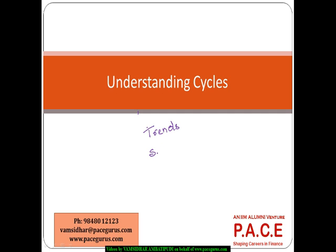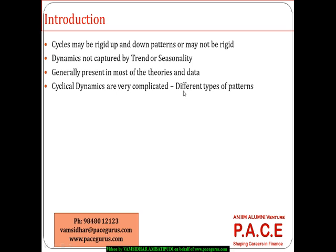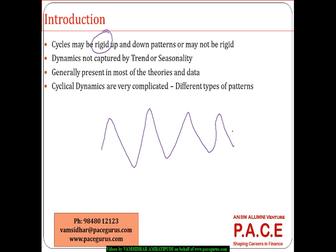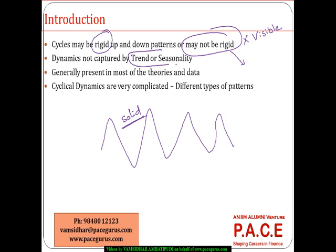How do we identify the trend and seasonality? One more important aspect is cyclicity present in the data. When talking about rigid cycles, it's like an up-and-down movement at different points in time where the pattern is more solid and clearly visible. In some cases, the pattern may not be rigid and is not clearly visible at all. Majority of real-world business, economics, and financial data are not much of rigid cycles.